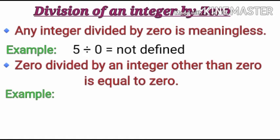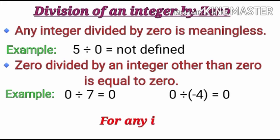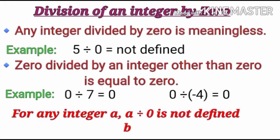For example, 0 divided by 7 is also equal to 0, and 0 divided by -4 is also equal to 0. So here we can say for any integer a, a divided by 0 is not defined, but 0 divided by a is 0 for a not equal to 0. So here a must not equal to 0.